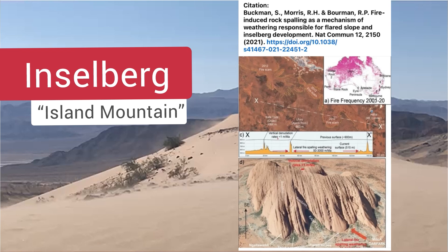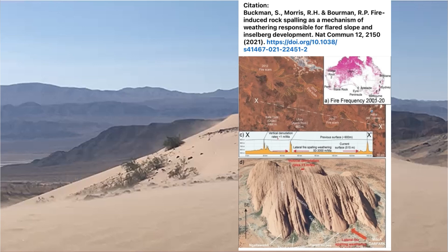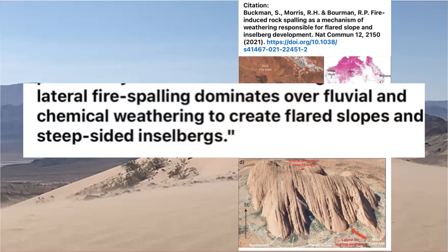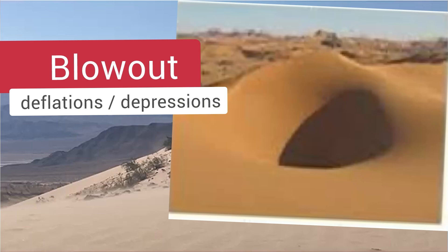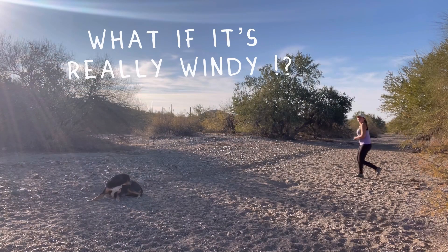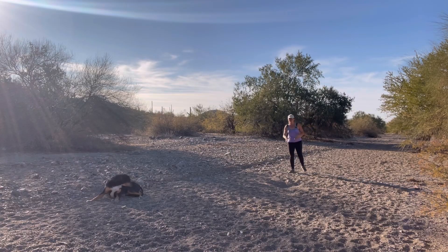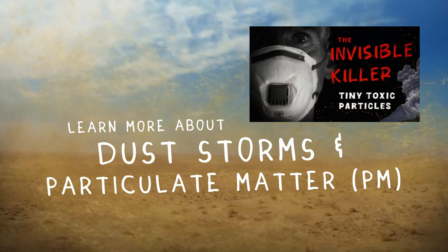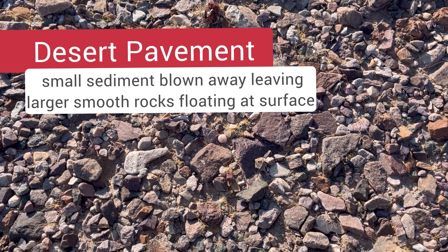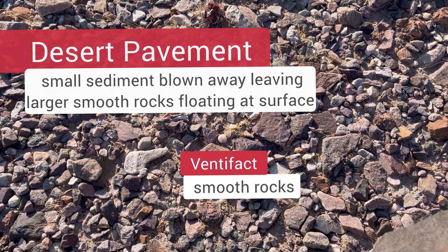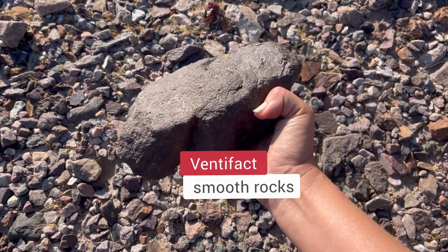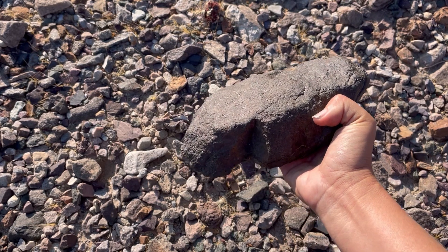Inselberg means island mountain. These isolated hills form with the help of wind abrasion, but recent research on the Uluru Inselberg in central Australia has pointed to fire as another factor, creating the flared slopes and steep sides common to inselbergs. Wind also causes blowouts or deflations in sandy environments. Then we get suspension — the process when the finer dust particles are lifted high into the atmosphere into a region similarly named the suspended load. And there's desert pavement — the stuff I've been walking around on here in the Mojave Desert — where the wind blows away the small sediment pieces leaving behind larger rocks that are wind-eroded, have smooth surfaces, and coat the surface like pavement, sometimes referred to as float.